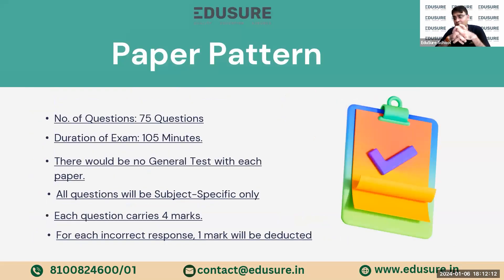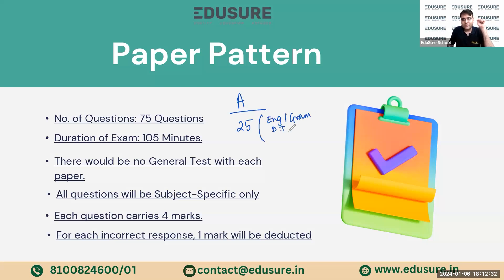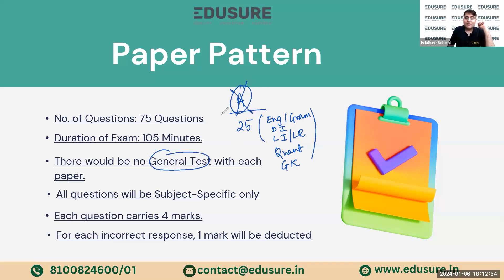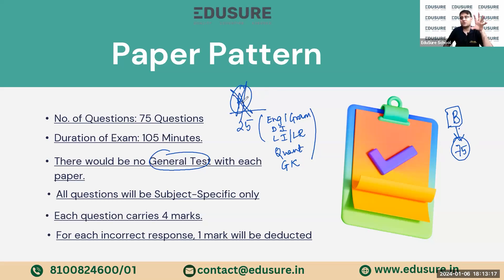The paper pattern has undergone a change. No longer is there a Section A and Section B segregation. Section A used to be a general test of 25 questions covering English grammar, data interpretation, logical reasoning, basic quantitative questions like time-speed-distance, and GK questions. This general test has been done away with. Now there is only the subject-specific test — for economics entrance, it will be economics-based knowledge. Section B, which used to contain 75 questions, is now the entire paper, and those 25 general questions will no longer feature.